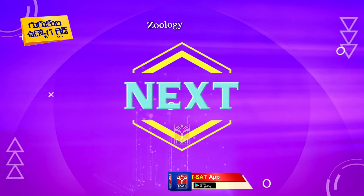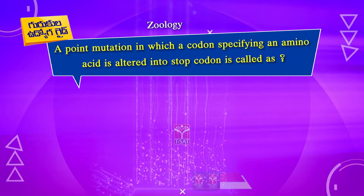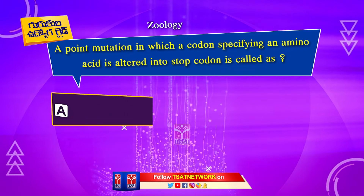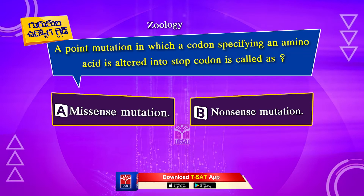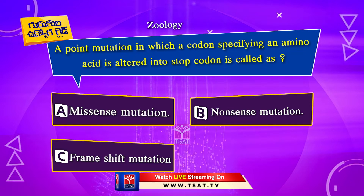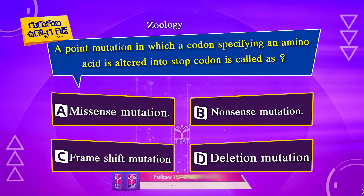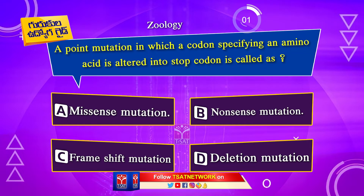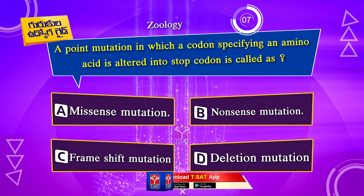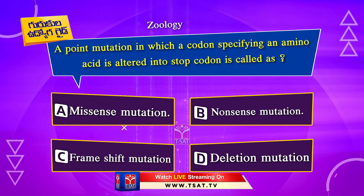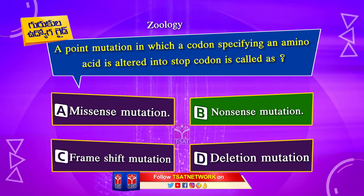Next question. A point mutation in which a codon specifying an amino acid is altered into a stop codon is called: Option A. Missense mutation. Option B. Nonsense mutation. Option C. Frame shift mutation. Option D. Deletion mutation. The correct answer is Option B. Nonsense mutation.